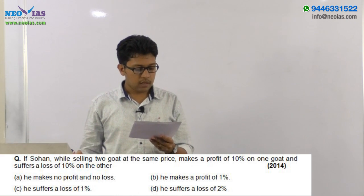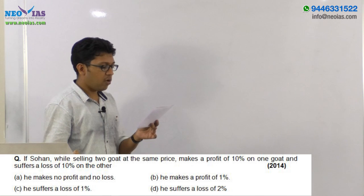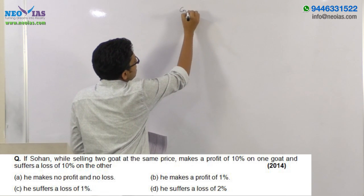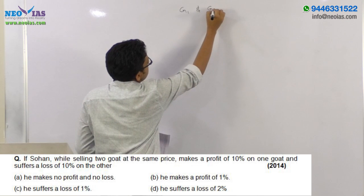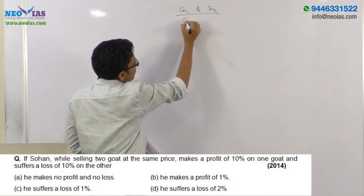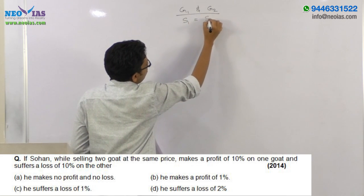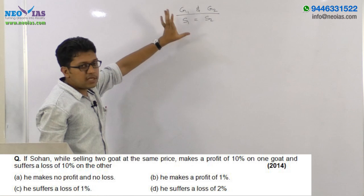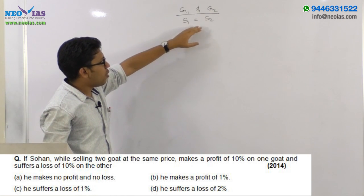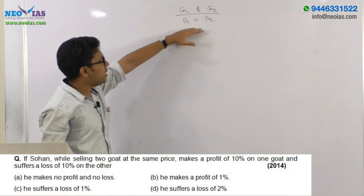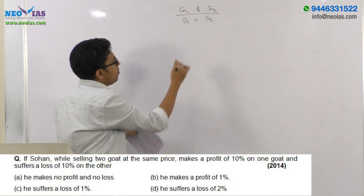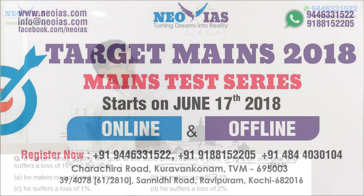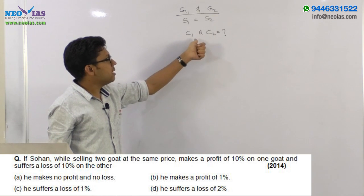The next question is from profit and loss. If Sohan, while selling two goods at the same price, makes a profit of 10% on one good and suffers a loss of 10% on the other — let the two goods be G1 and G2. The selling prices S1 and S2 are the same. No information is given about the cost prices, and we need to find whether he makes a profit or loss percentage overall. So first we need to find the relation between cost prices C1 and C2.